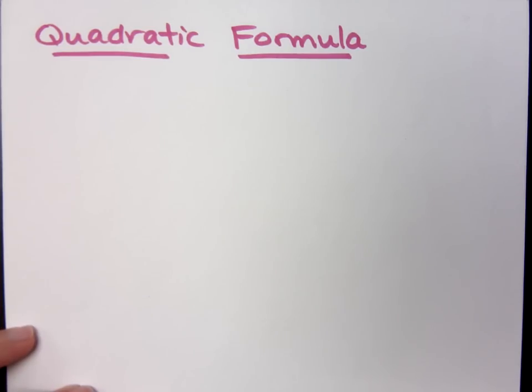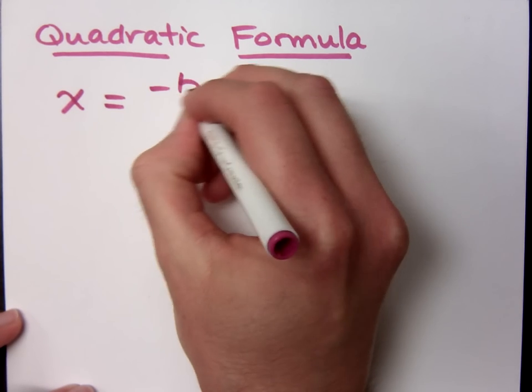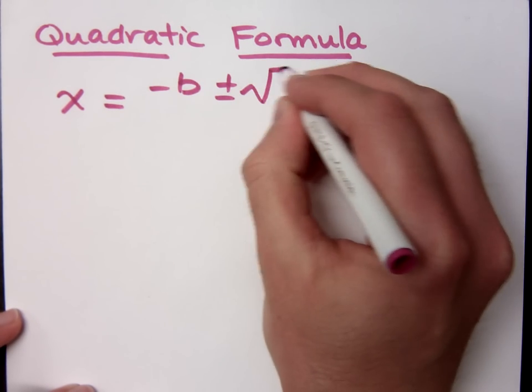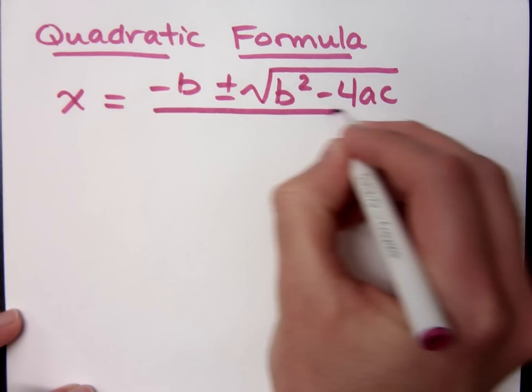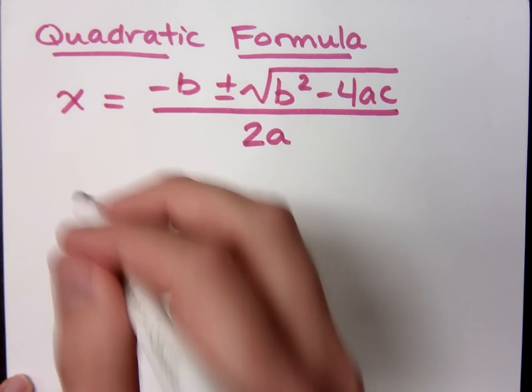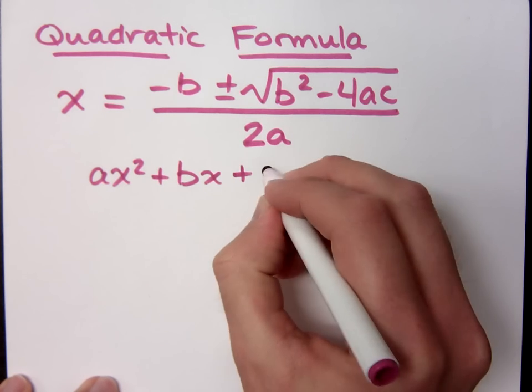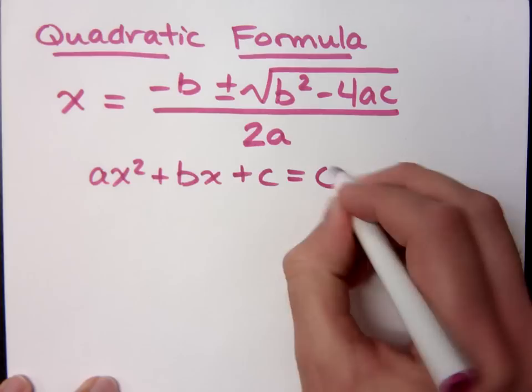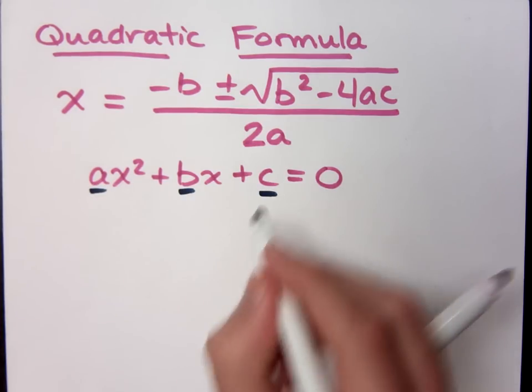So we do have something that is very useful to us, and that is the quadratic formula. Perhaps you know it, and in case you don't, let me write it out for you. So x equals negative b plus or minus the square root of b squared minus 4ac all over 2a. And the a, b, and c all come from the coefficients and the constant term that we see when we have a quadratic equation.